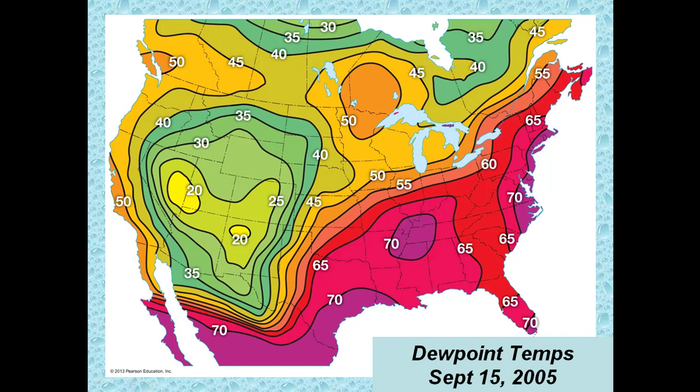Now oftentimes when you watch the local news and the meteorologist talks about high dew points or oppressive dew points, they usually show a map similar to this, where anywhere in the 60 to 70 range would be considered oppressive humidity or very humid air, and dew points that are 50 and below would be dry air.